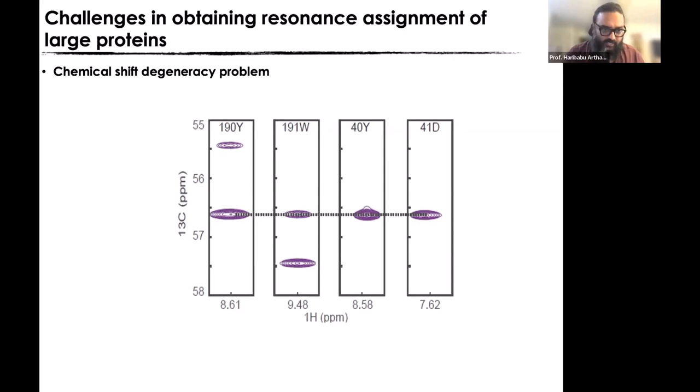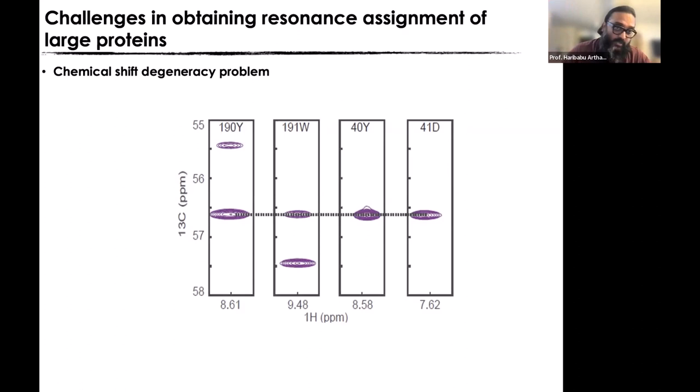I know one resonance is to its own C-alpha and one is to the neighboring C-alpha. To connect the Lego blocks, I need to find another strip where the C-alpha-minus-1 resonance matches with my C-alpha resonance. Once I know this, I can connect the Lego blocks. We have anchor points — for example, glycine has a unique C-alpha chemical shift at 45 ppm — and based on that and knowing the primary sequence, we can lock in the resonance assignment.